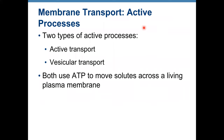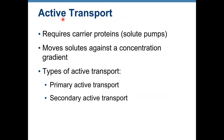Now, active transport. Active transport requires ATP and moves solutes across a living plasma membrane. There are two types of active processes: active transport and vesicular transport. Active transport requires carrier proteins — called pumps — moves solutes against a concentration gradient, and has two subtypes: primary active transport and secondary active transport.